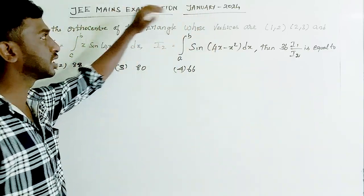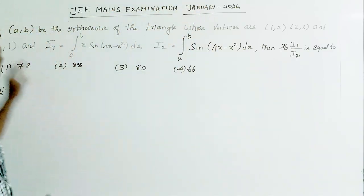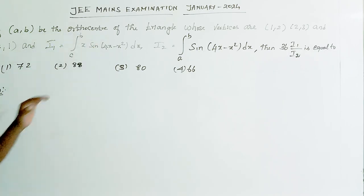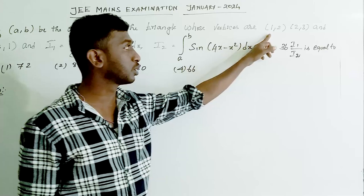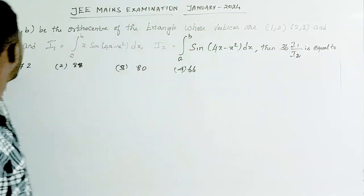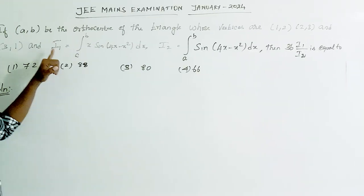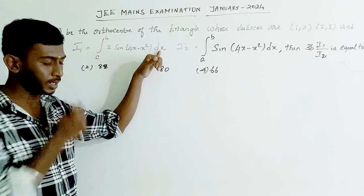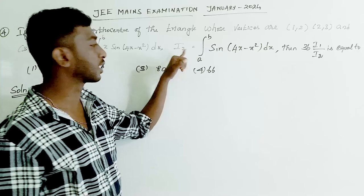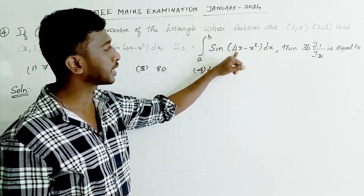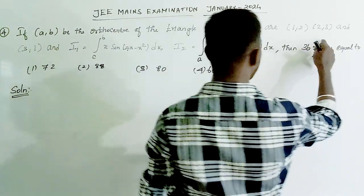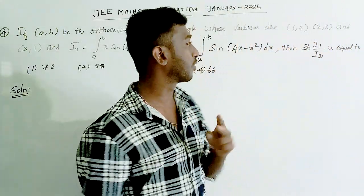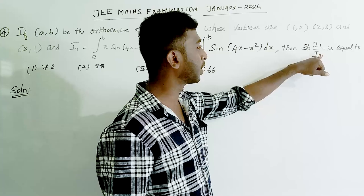JEE Mains examination, January 24, Question 4. If (a, b) is the orthocenter of a triangle whose vertices are (1,2), (2,3), and (3,1), and I1 is the integral from a to b of x·sin(4x - x²) dx, and I2 is the integral from a to b of sin(4x - x²) dx, then find the value of 36·I1 divided by I2.